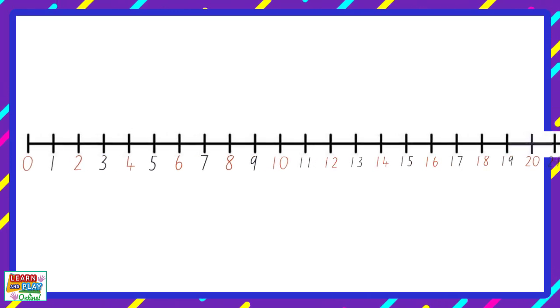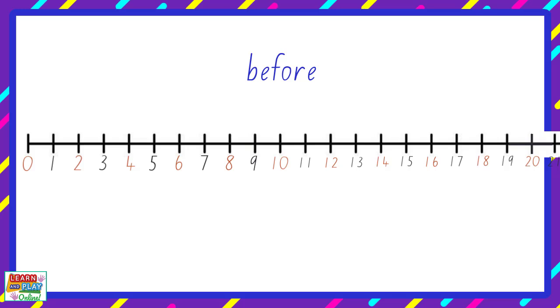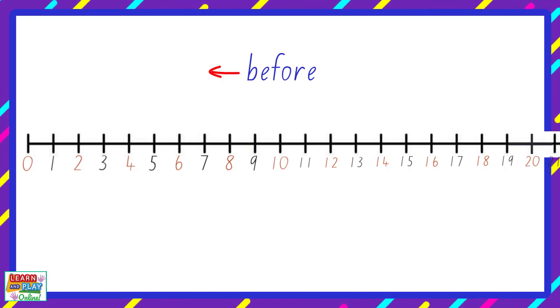When we are talking about numbers that come before another number, we are referring to the number on its left. For example, the number that comes before the number 9 is 8.